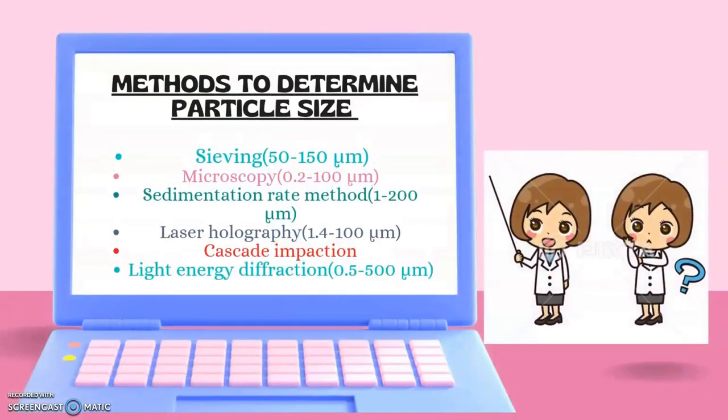There are various methods which can be used to determine particle size. Starting from sieving for particle size range 50 to 150 micrometer, microscopy for 0.2 to 100 micrometer, sedimentation rate method (Andreasen pipette method) for 1 to 200 micrometer, laser holography for 1.4 to 100 micrometer, cascade impaction, and light energy diffraction for particle size 0.5 to 500 micrometer.